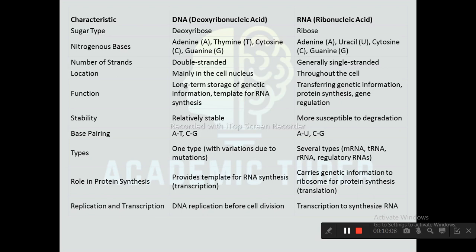In DNA, the base pairs are adenine-thymine and cytosine-guanine, whereas in RNA, the base pairs are adenine-uracil and cytosine-guanine. DNA is generally of only one type, whereas RNA is of several types. DNA provides the template for RNA synthesis, whereas RNA carries genetic information to ribosomes for protein synthesis. DNA replication occurs before cell division, whereas RNA is produced through transcription.